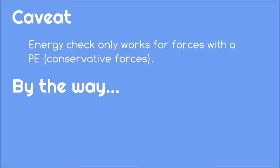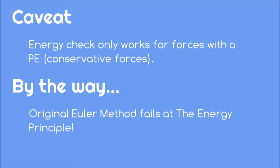By the way, before Cromer came along, the original Euler method failed to keep energy constant, because in the original version, you updated the position before the momentum.